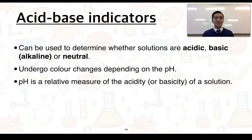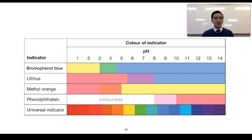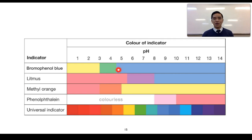Indicators are used because they undergo particular color changes depending on the pH. pH is essentially a relative measure of the acidity or basicity of a solution. As an example, bromophenol blue can undergo a color change from yellow to blue, with an intermediate green color. If your solution has a pH less than three, bromophenol blue gives a yellow color; between about three to four and a half, it gives a green color.